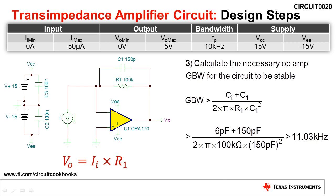For this design, the minimum required gain bandwidth is 11.03 kilohertz. Since the typical gain bandwidth of the OPA170 is 1.2 megahertz, we easily meet this requirement.